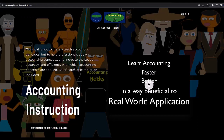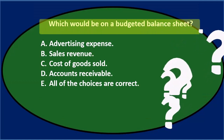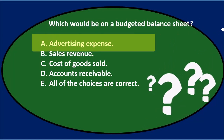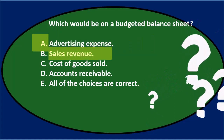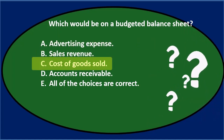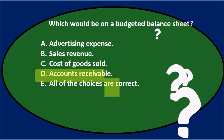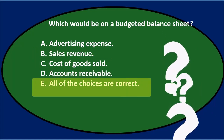If you would like a commercial-free experience, consider subscribing to our website at accountinginstruction.com or accountinginstruction.thinkific.com. First question: which would be on a budgeted balance sheet? A. Advertising expense. B. Sales revenue. C. Cost of goods sold. D. Accounts receivable. Or E. All of the choices are correct.